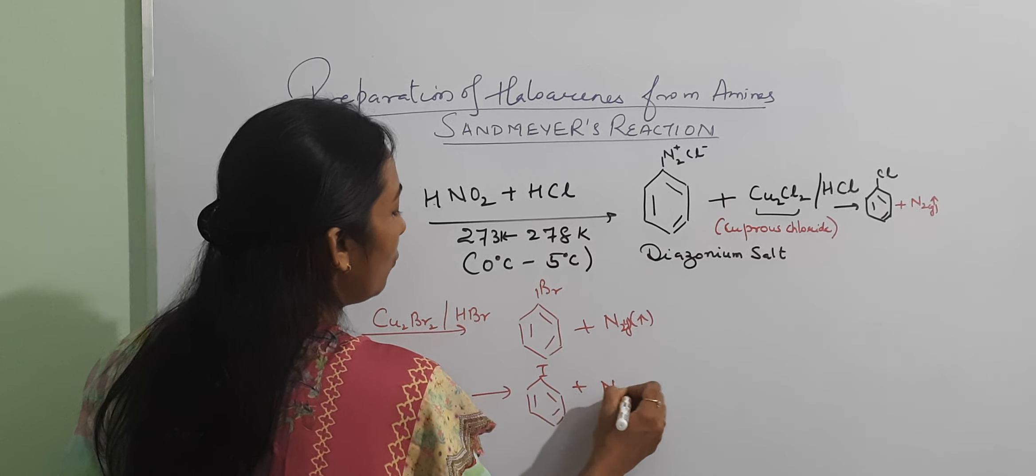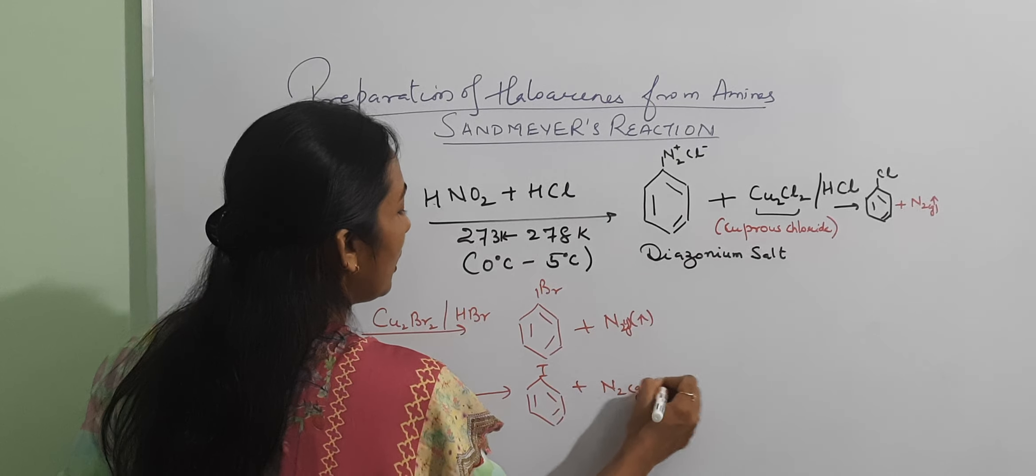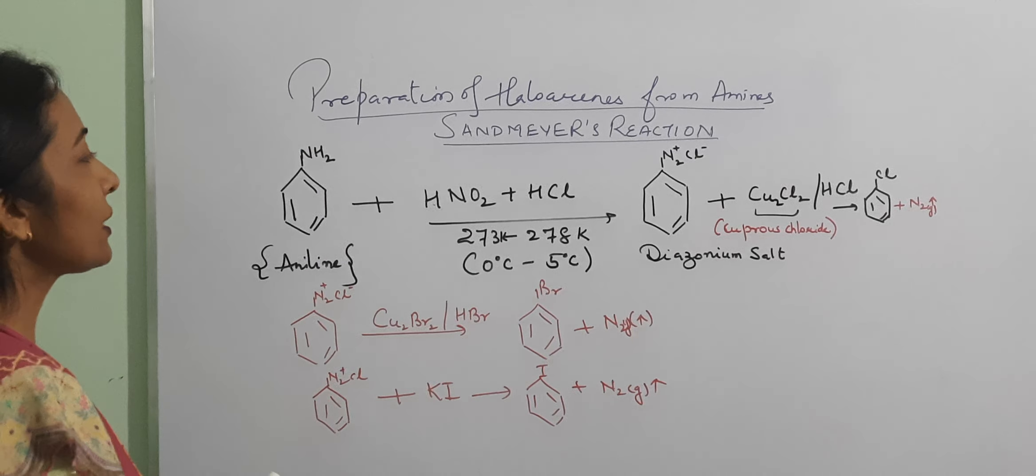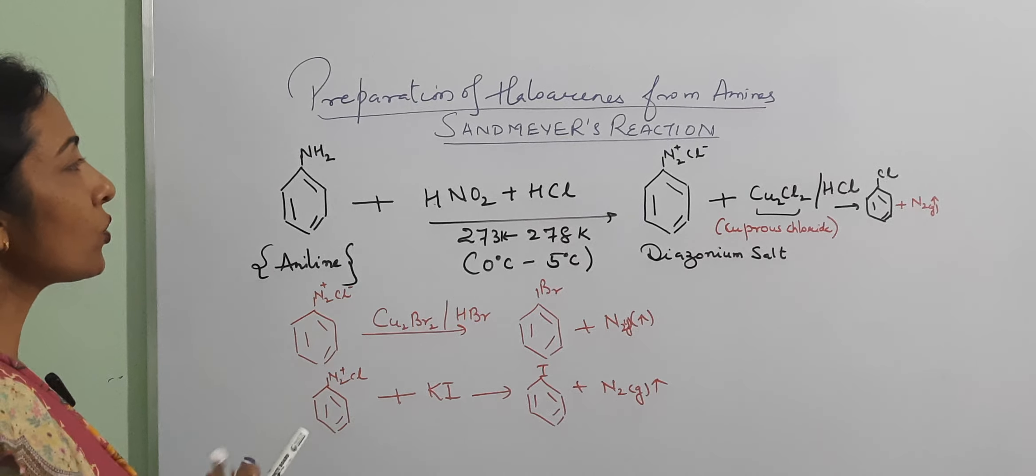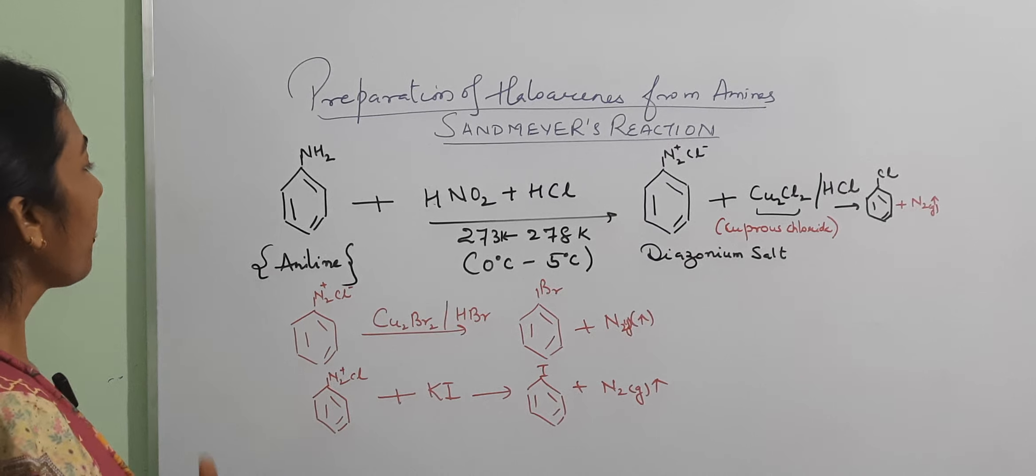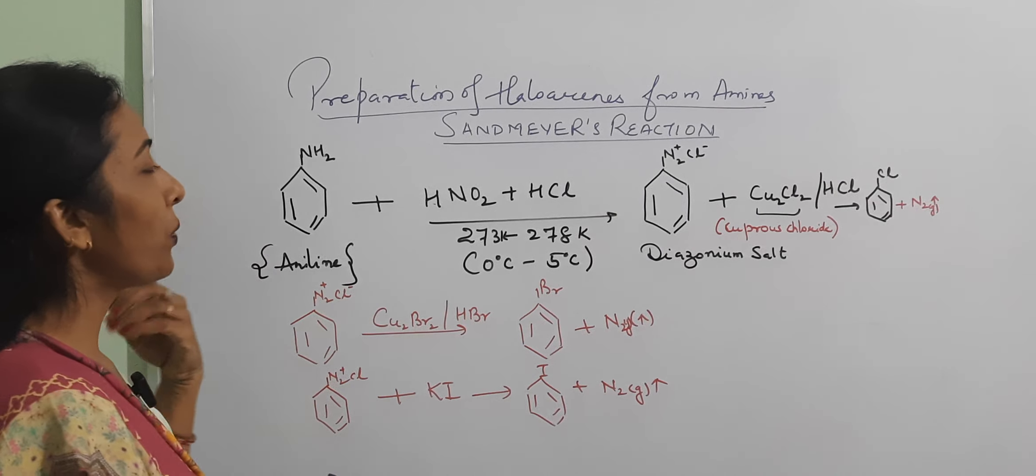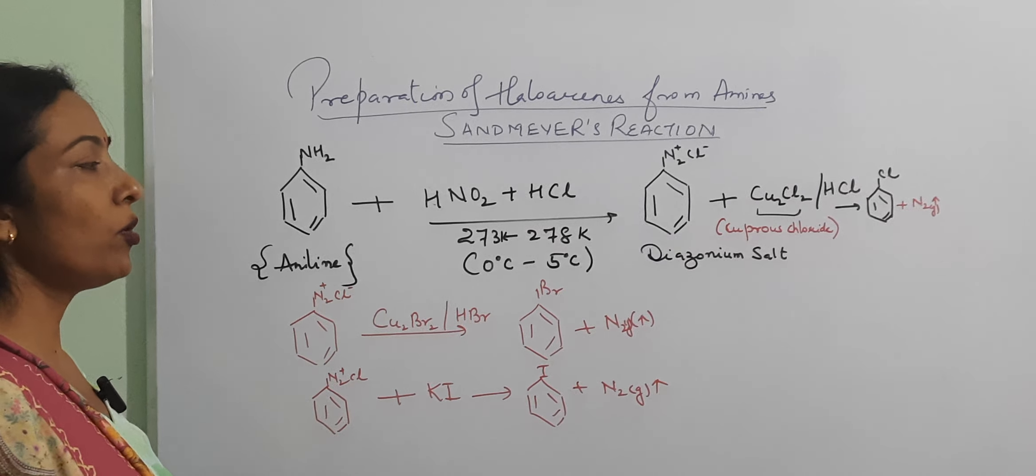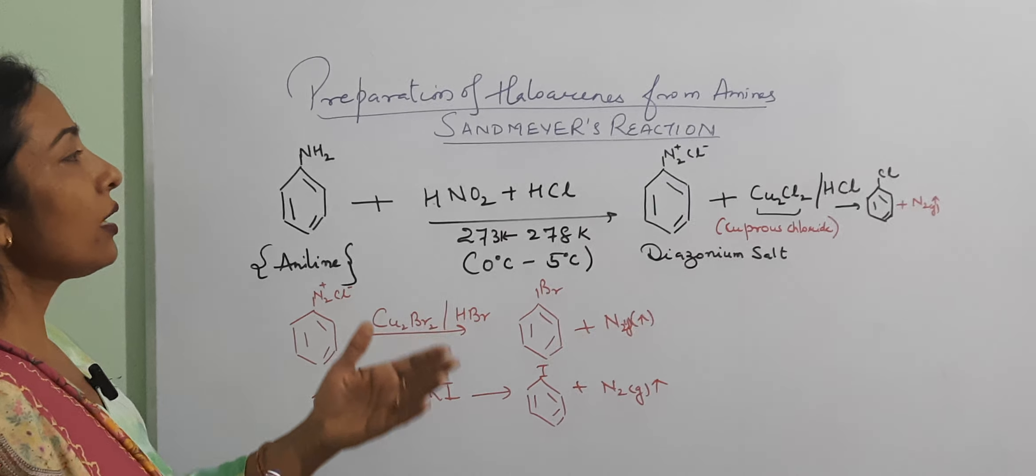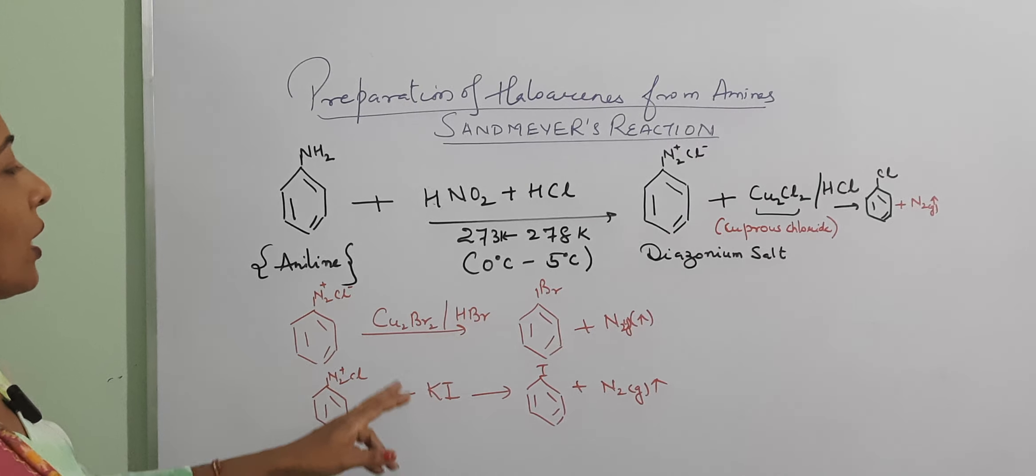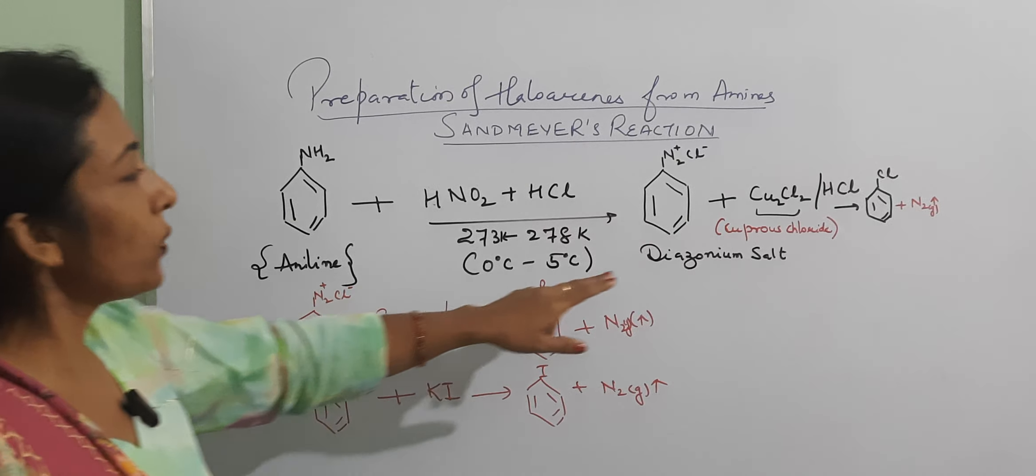Plus N2 gas. This method is used to prepare chlorobenzene, bromobenzene and iodobenzene. If we make chlorobenzene and bromobenzene, then we use cuprous bromide or cuprous chloride.